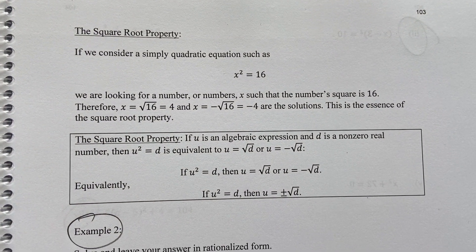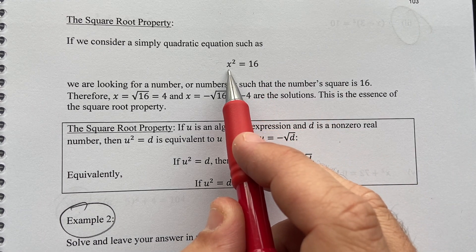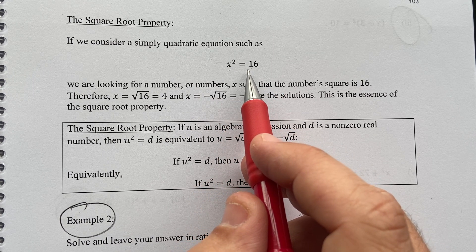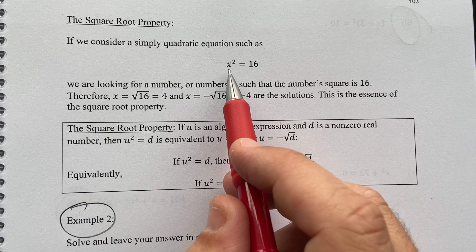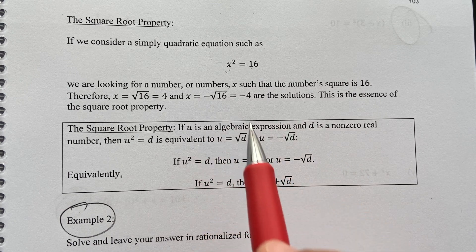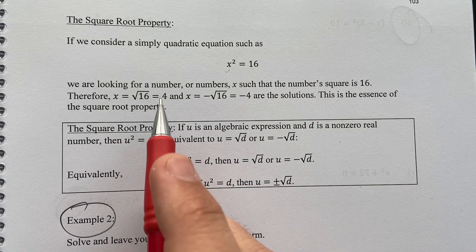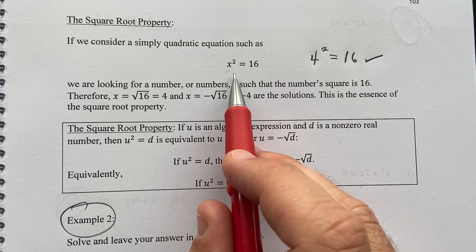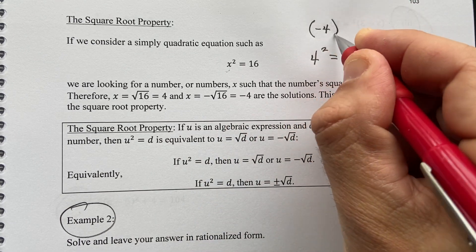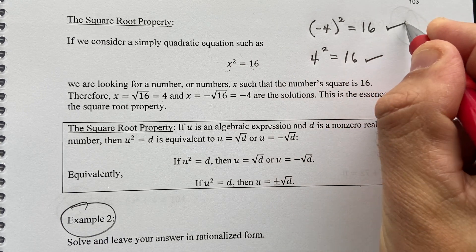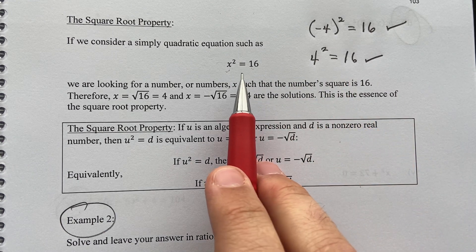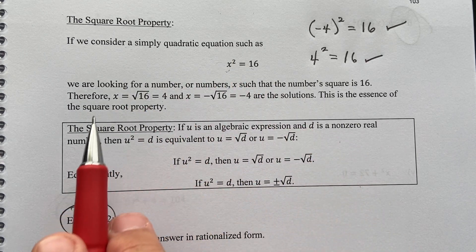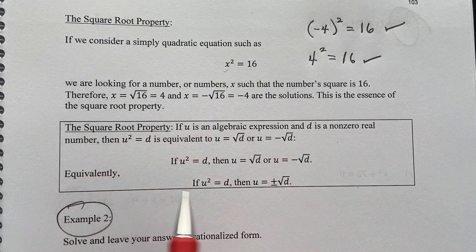Let's talk about the square root property. Imagine we're looking for the solution to x squared equals 16 — we want all numbers that when squared give 16. Definitely x equals 4, since 4 squared is 16. But there's another solution: negative 4 squared also gives positive 16, so both positive and negative 4 are solutions. Let's see what the square root property says about this.